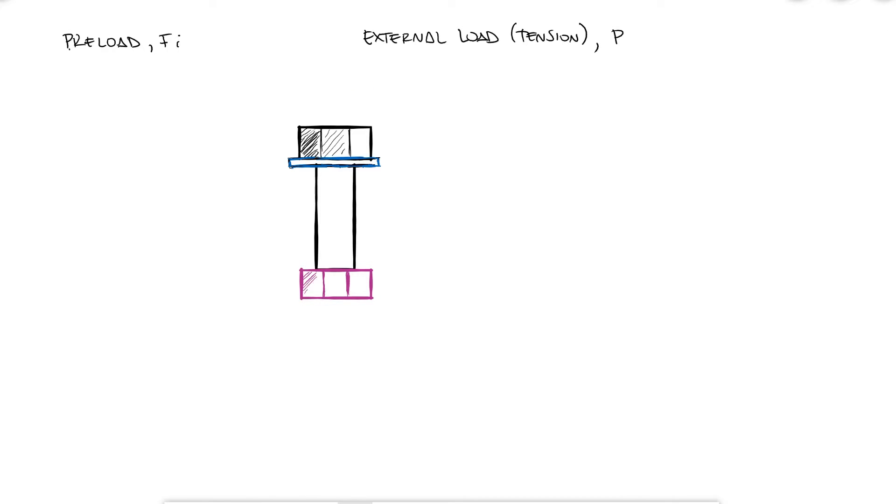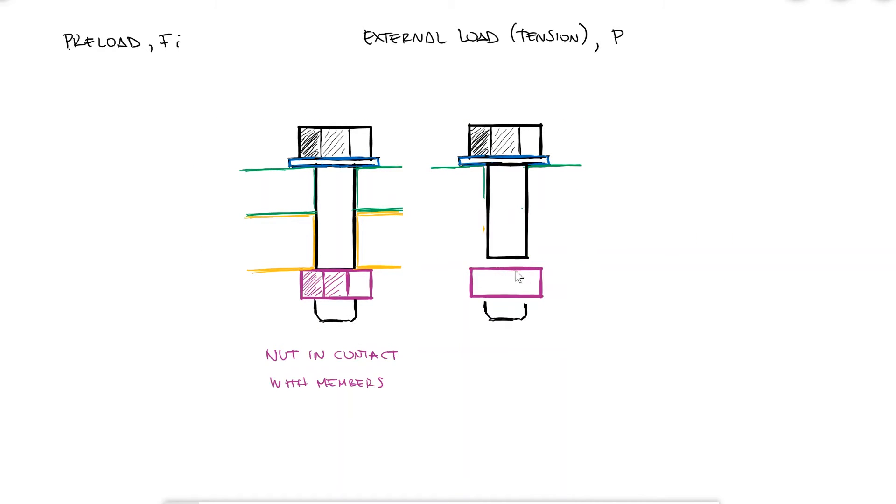When a nut of a bolted joint is in contact with the members but is not yet tightened to introduce a preload, the members and the bolt's clamped section or grip can be modeled as springs in parallel. As the nut is twisted to tighten the grip, the bolt will be subjected to tension as the members are compressed. This is what is known as the pre-tension or preload.